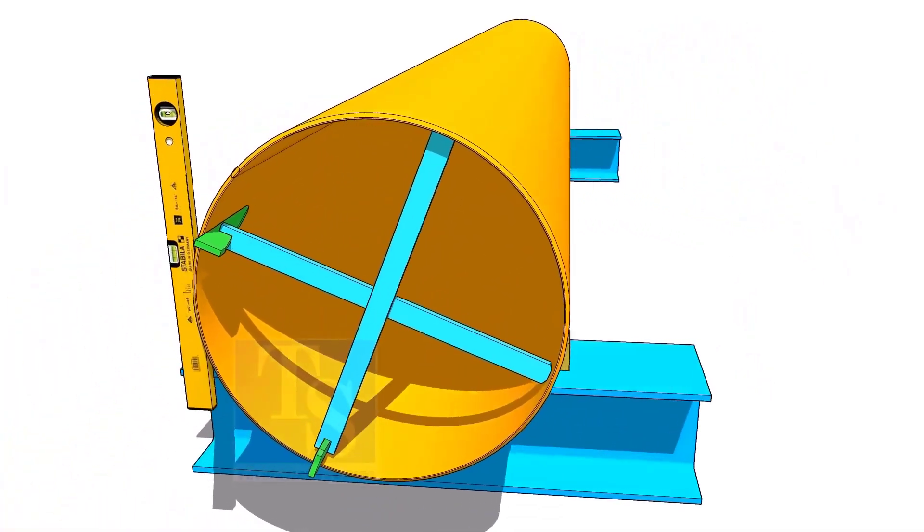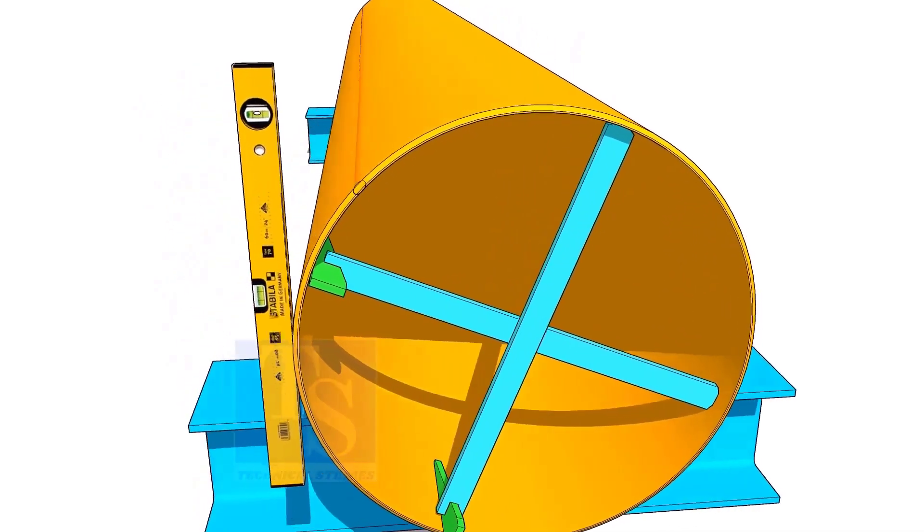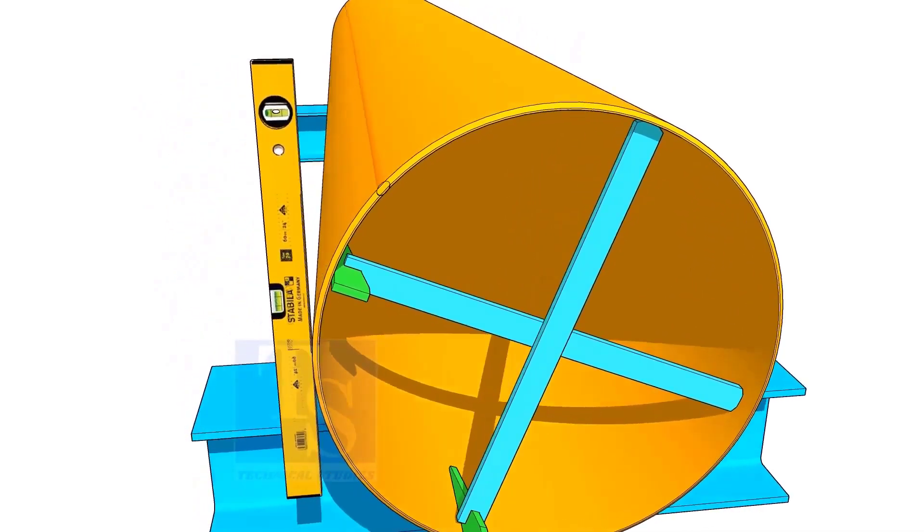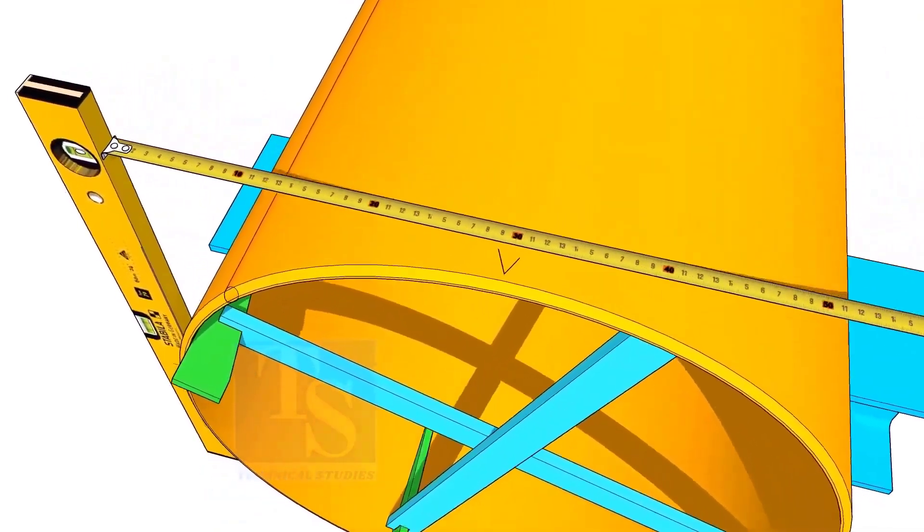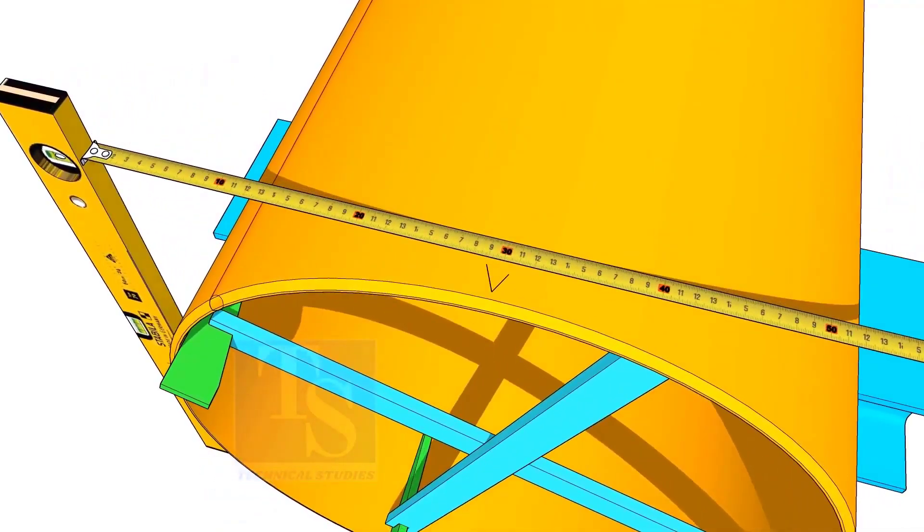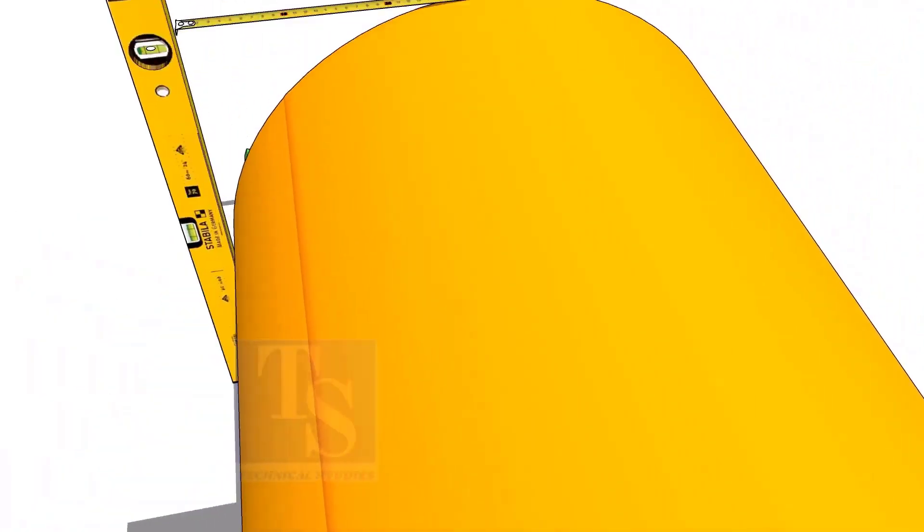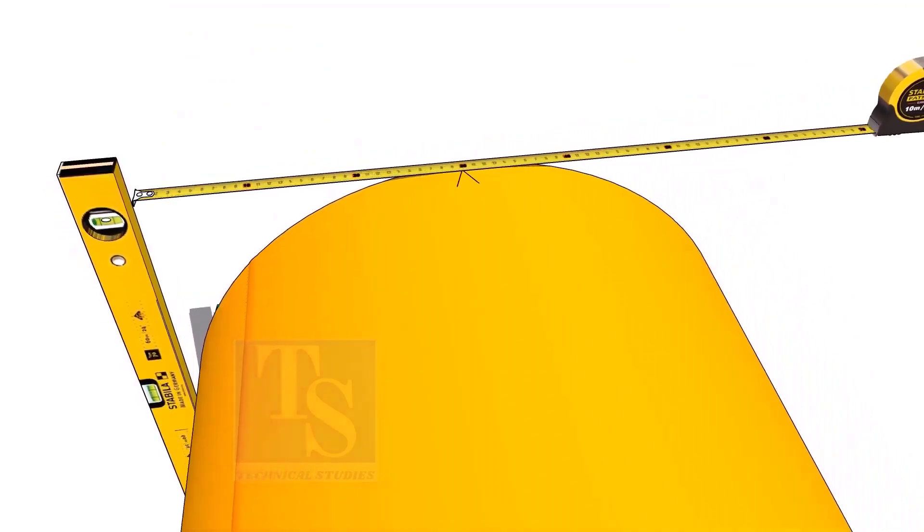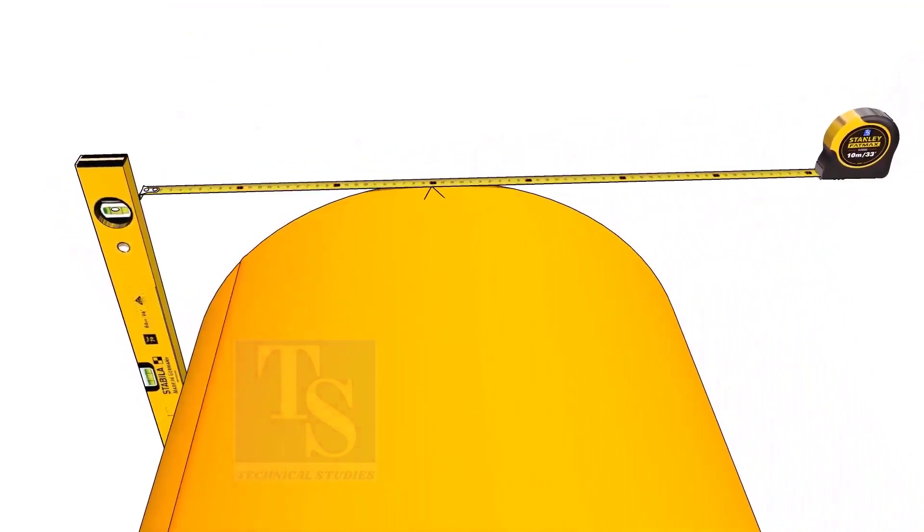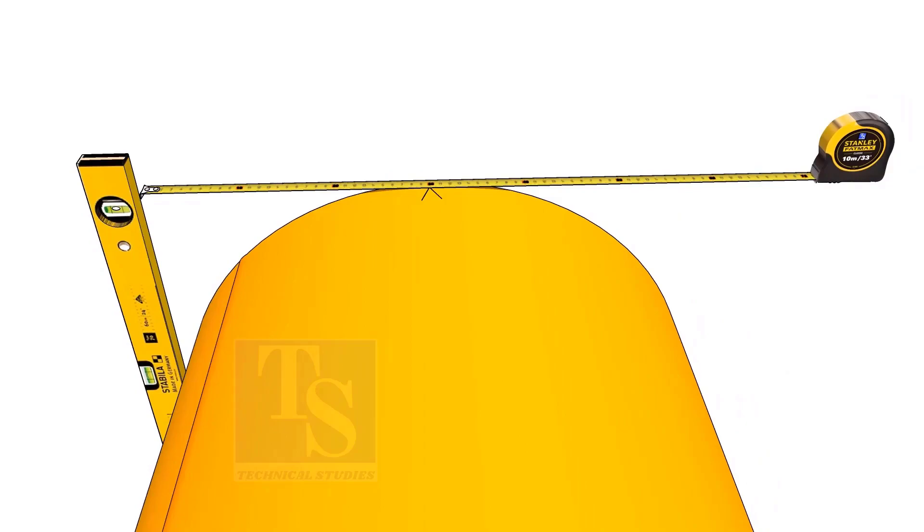Hold a level bottle at the side of the pipe vertically and firmly as shown. Now, mark the half diameter on the top of the pipe on both ends. Draw a line connecting these marks.